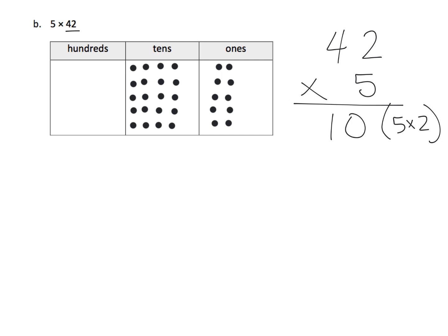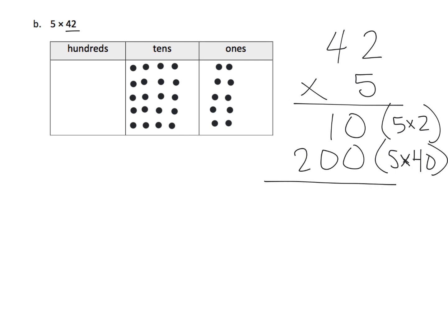Now let's look at our tens. We had 4 tens and multiplied by 5, so we end up with 20 tens. And 20 tens is 200, because we did 5 times 40. Using the partial products algorithm: 0 ones plus 0 ones gives us 0 ones; 1 ten plus 0 tens gives us 1 ten; and 0 hundreds plus 2 hundreds gives us 200. So our partial products answer is 210.